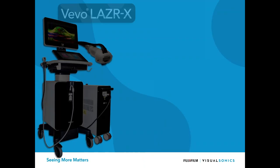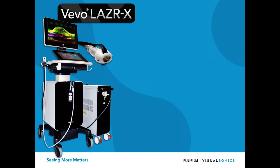And here it is — the Vevo Laser X! This is the next generation photoacoustic imaging system, combining all the advantages of photoacoustic imaging on the 3100 acquisition platform, with several new additions. I want to stress that this is truly co-registered multimodal imaging — collecting ultrasound, Doppler, ultrasound contrast, non-linear contrast imaging, and photoacoustic imaging all in one platform. You get blood flow, blood volume, blood oxygen saturation, anatomy, and volumes from a single system.